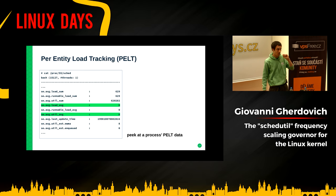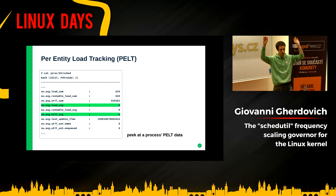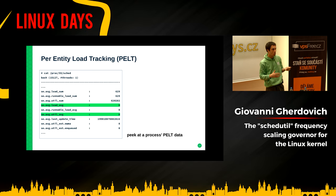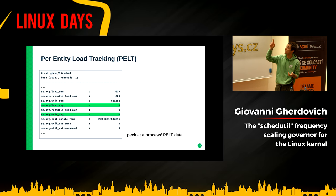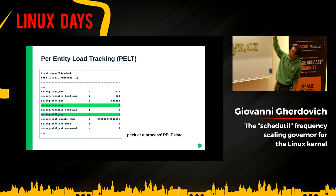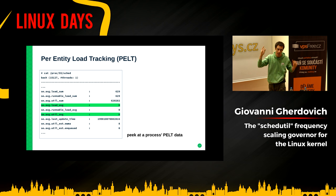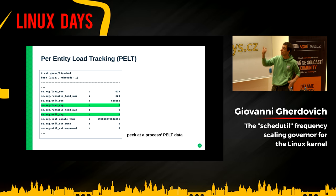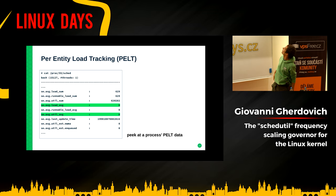You can also interrogate your system for the load and utilization of a specific process using /proc/PID/sched. The file contains SE (scheduler entity) .avg.util_avg and load values. For a quiet bash console, util_avg was zero because it was doing nothing, and load was zero as well.